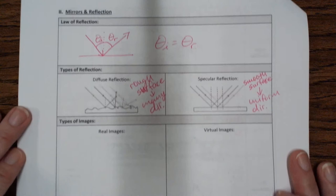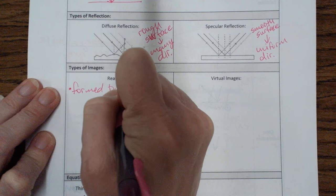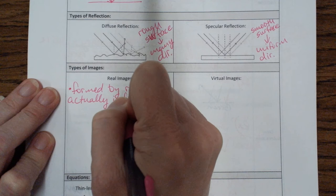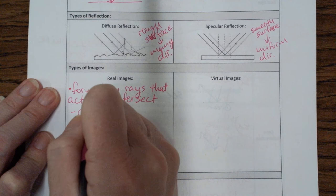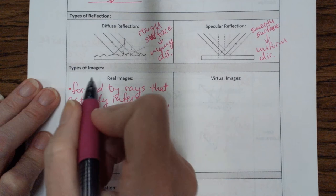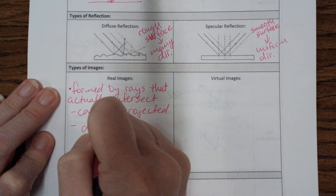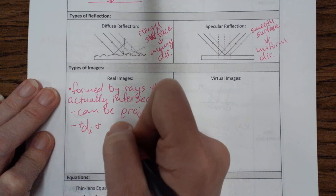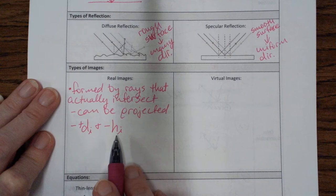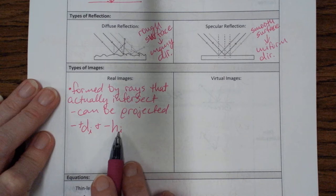Different types of images result from mirrors and lenses. Real images are formed by light rays that actually intersect — these images can be projected. The image distance is noted as d-i, and for real images d-i is positive, meaning the image is projected in front of the mirror. The image height h-i is negative, meaning the image is inverted — upside down.